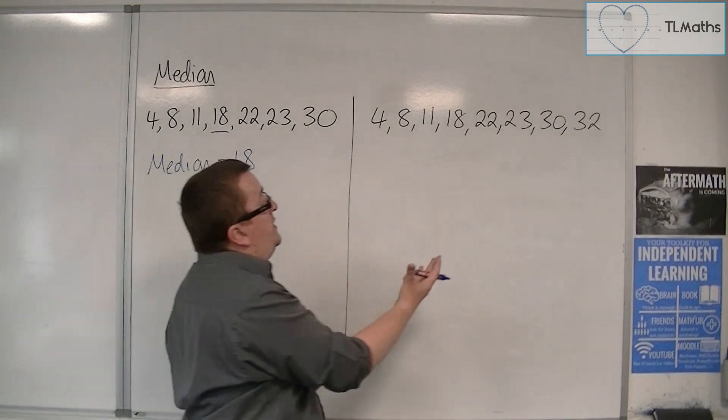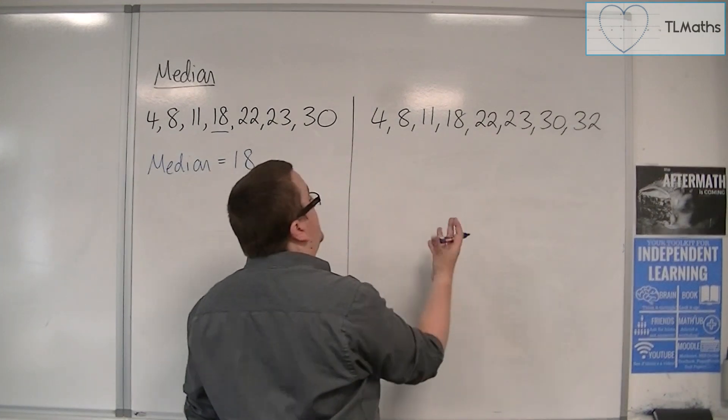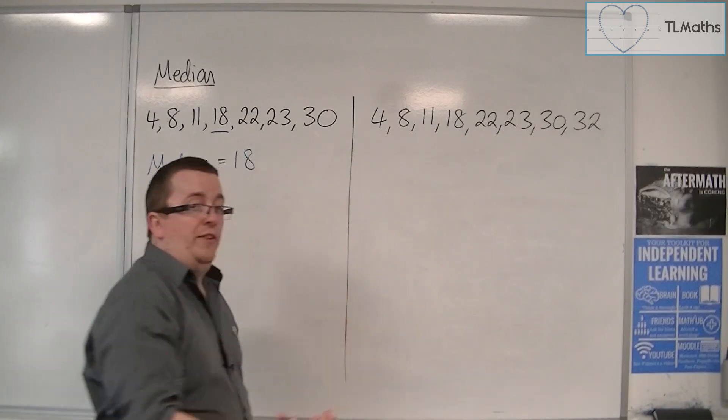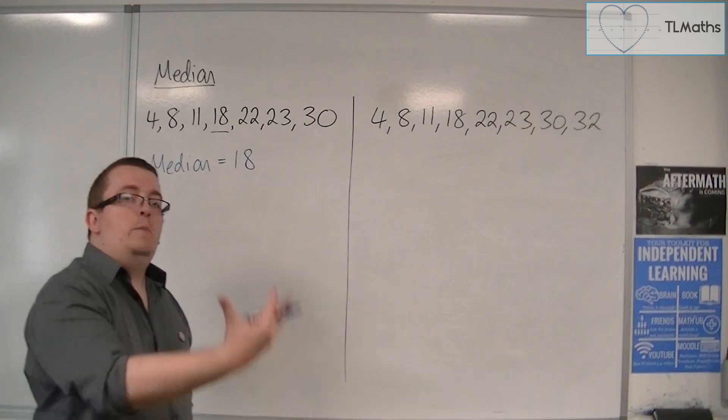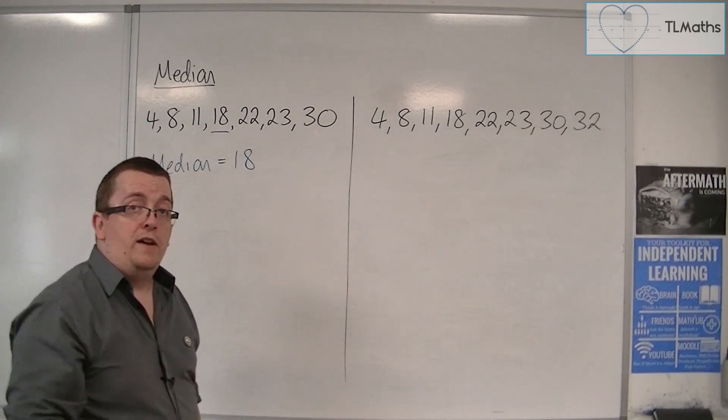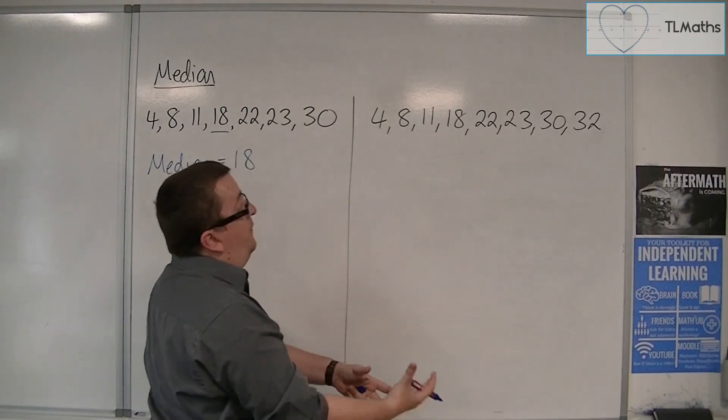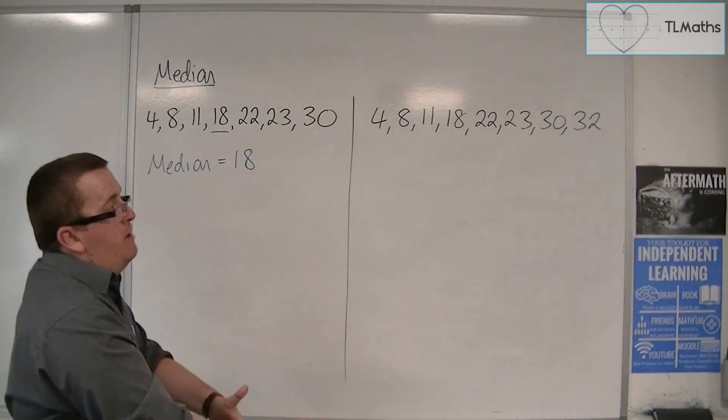Now for this set of data, we actually have eight numbers. 1, 2, 3, 4, 5, 6, 7, 8. We add one to that to get us nine, and then we halve that, that's 4.5. So the median is the four and a half number in the list.